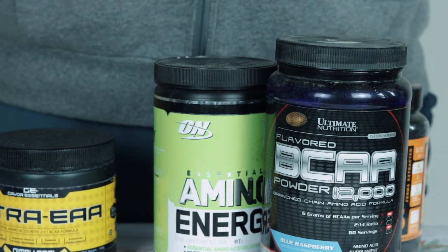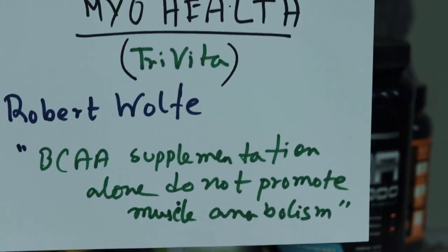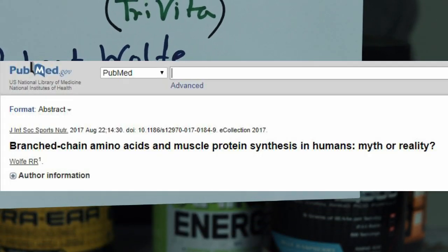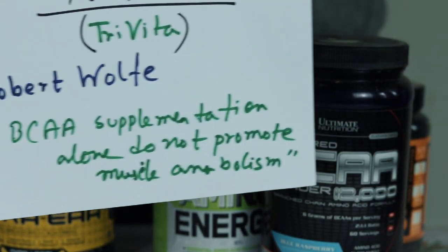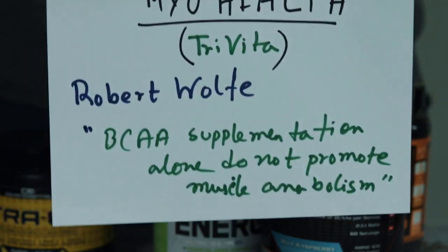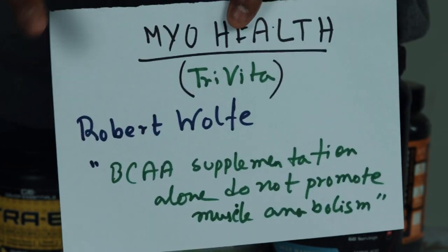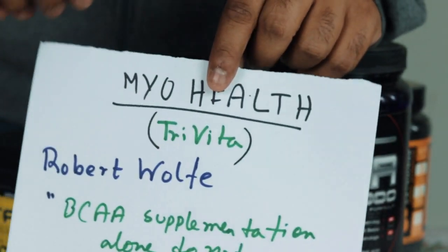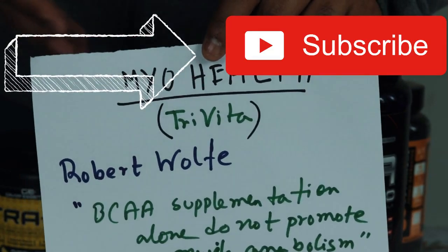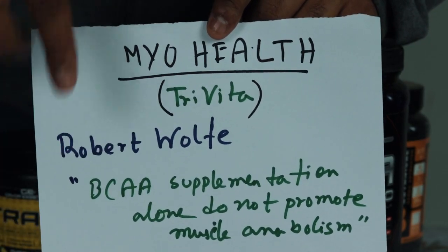The whole question of essential amino acids versus BCAAs occurred around 2007, when a researcher named Robert Wolfe published a paper — I'm going to put the link in the description. He claimed that BCAA supplementation alone is not enough for muscle synthesis, or getting your body into an anabolic state so that you can synthesize muscle. That's what he claimed in that paper, and that's what triggered the whole wave of essential amino acid products to come onto the market.